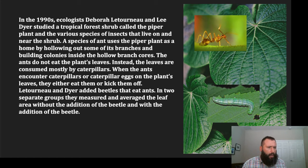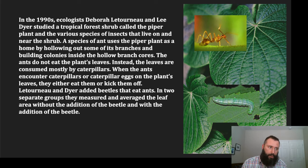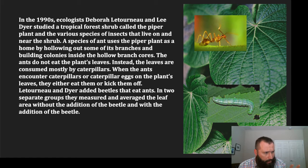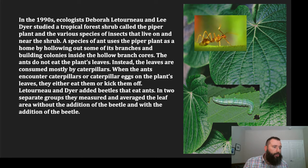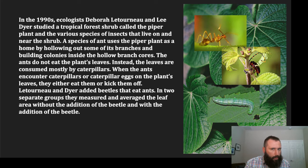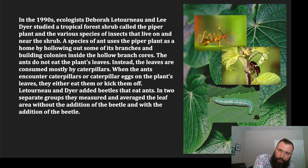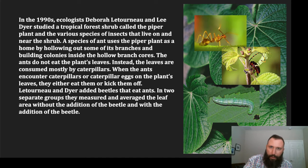Letourneau and Dyer were interested to see what effect the ant has on the overall community structure of this piper plant. They added beetles that eat ants. In two separate groups, they measured and averaged the leaf area with the addition of the beetle and without it. The beetle is not normally part of this community — it's there only to remove the ant. Letourneau and Dyer weren't going to go in with forceps and remove tens of thousands of ants, so they did it with the beetle.